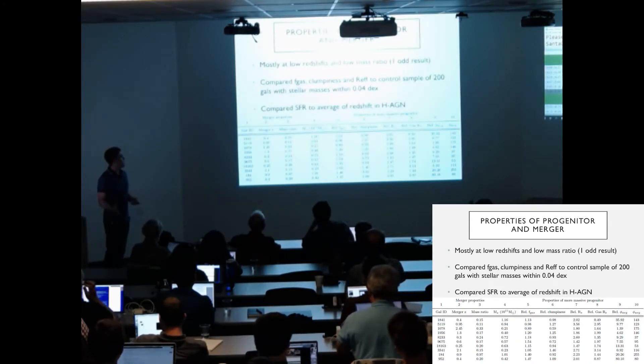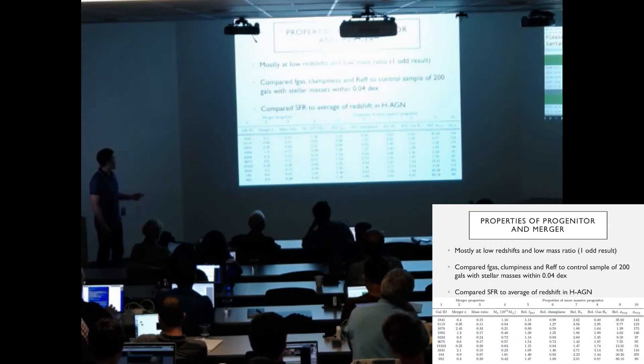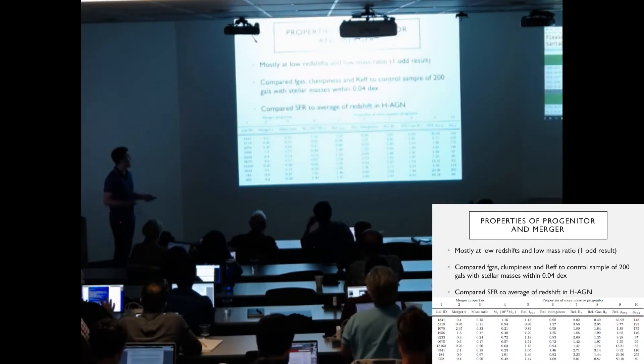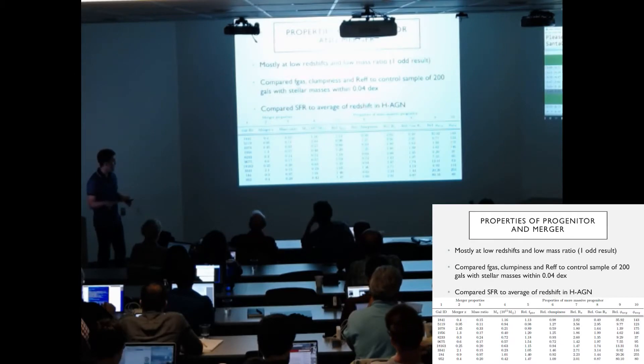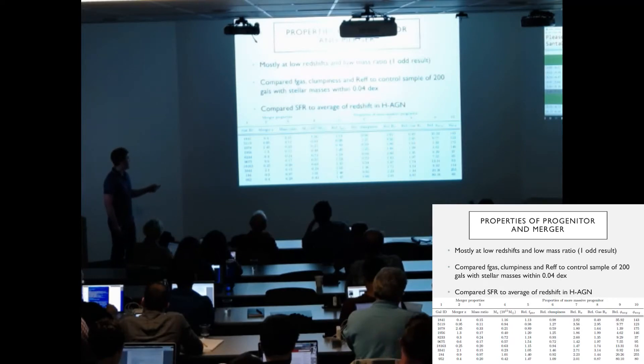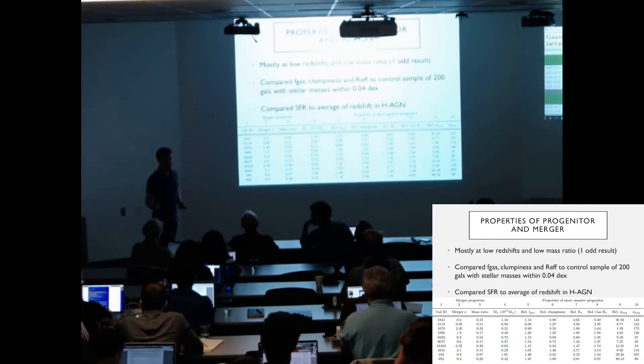So are there any properties of the progenitor and the merger that would give an indication of how they formed? Well they mostly form at low redshifts and they all have, apart from one example, low mass ratios down to around 1 in 10. What we did was we created a control sample of around 200 galaxies with stellar masses within 0.04 dex of the progenitor at the redshift of the merger. We used this to create relative gas fractions, relative clumpiness and relative effective radii of both the stellar populations and of the gas. We can see that generally these galaxies aren't particularly gas rich and they aren't particularly clumpy. They are on the whole generally larger than the control sample.